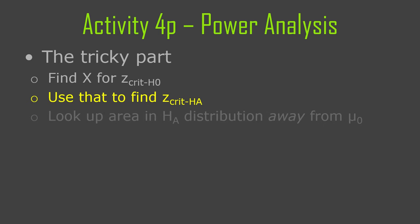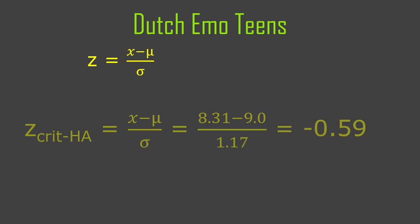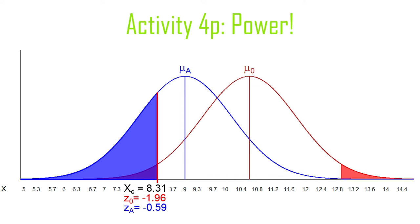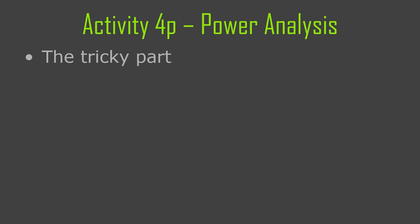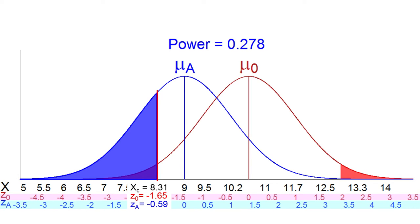We use 8.31 to find the z-critical in the alternative hypothesis distribution. Running the z-score formula with a mean of 9.0 and standard error of 1.17, we get a z-score of negative 0.59. Looking up the area below negative 0.59 in the table gives us 0.2776. The computer came up with the same answer, which is comforting. So our power estimate is 0.2776 — about 28% — which is not a lot of power. It's pretty pathetic.